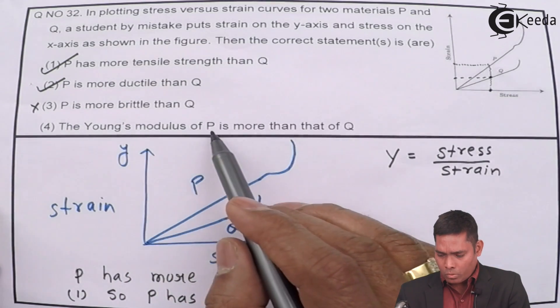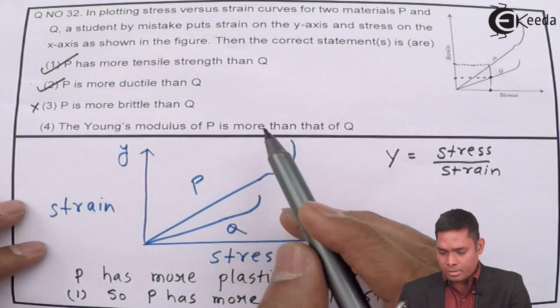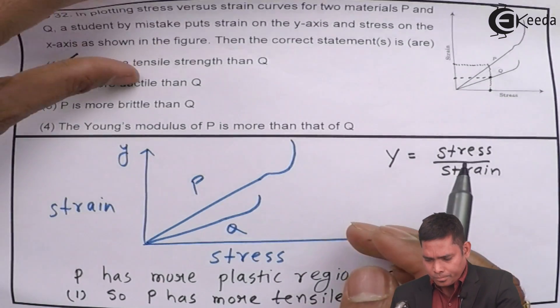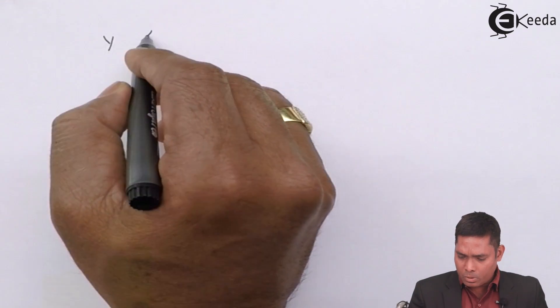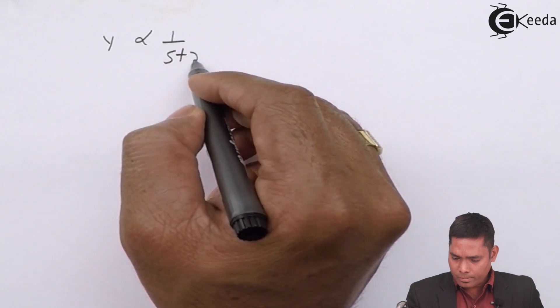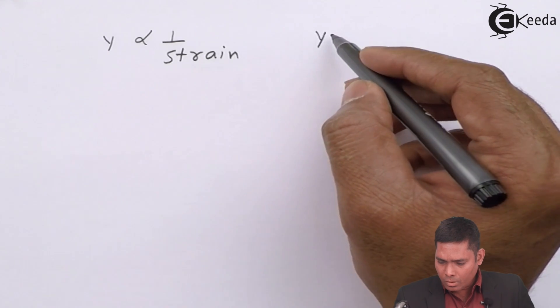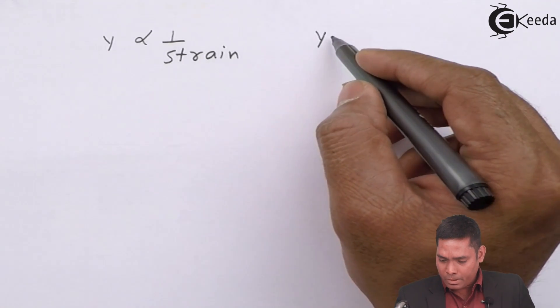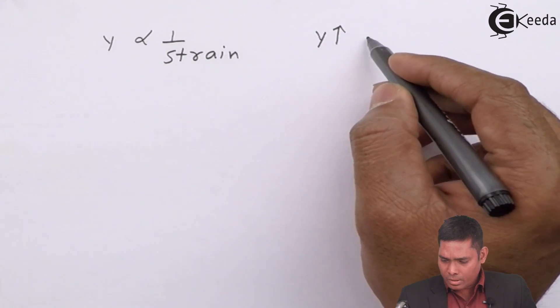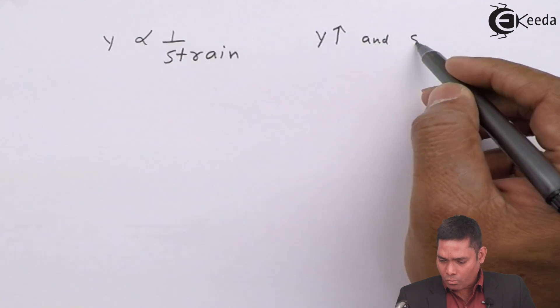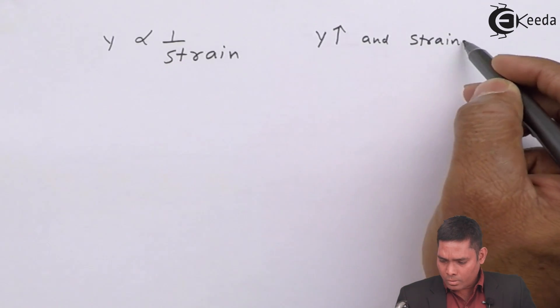Young's modulus of P is more? No, it is not more, it should be less. That I will explain here. Y is inversely proportional to strain. Y inversely proportional means Y increases if strain decreases.